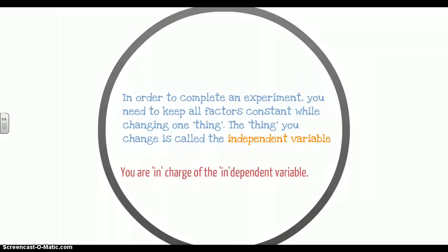In order to complete an experiment, you need to keep all factors constant while changing one thing. The thing you change is called the independent variable, and remember, you are in charge of the independent variable. It's the thing that you change on purpose.